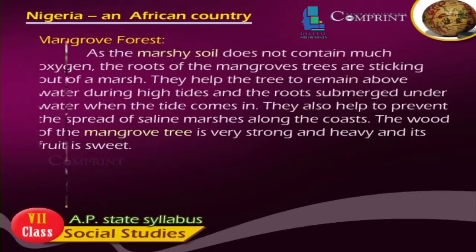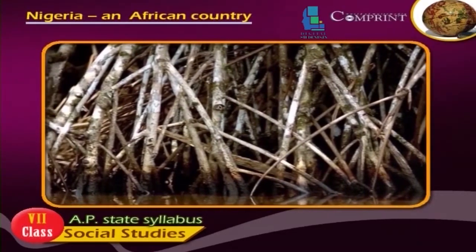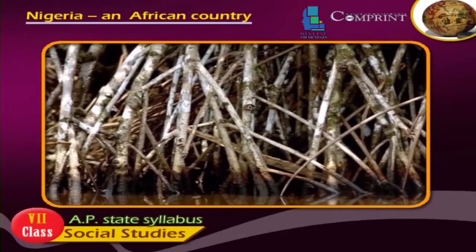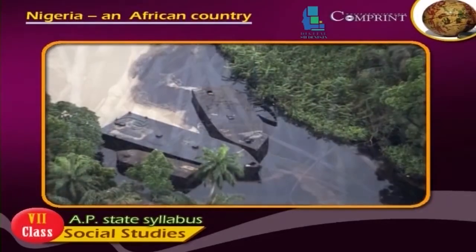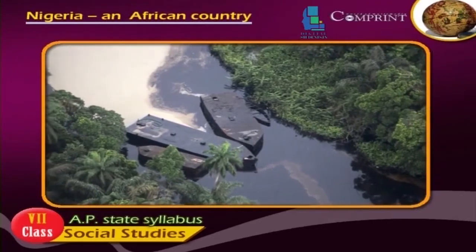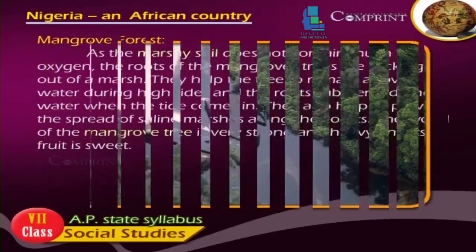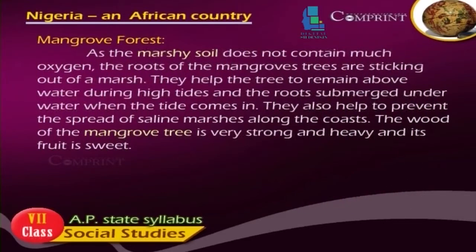As the marshy soil does not contain much oxygen, the roots of the mangrove trees stick out of the marsh. They help the tree to remain above water during high tides, and the roots are submerged underwater when the tide comes in. They also help to prevent the spread of saline marshes along the coasts. The wood of the mangrove tree is very strong and heavy, and its fruit is sweet.